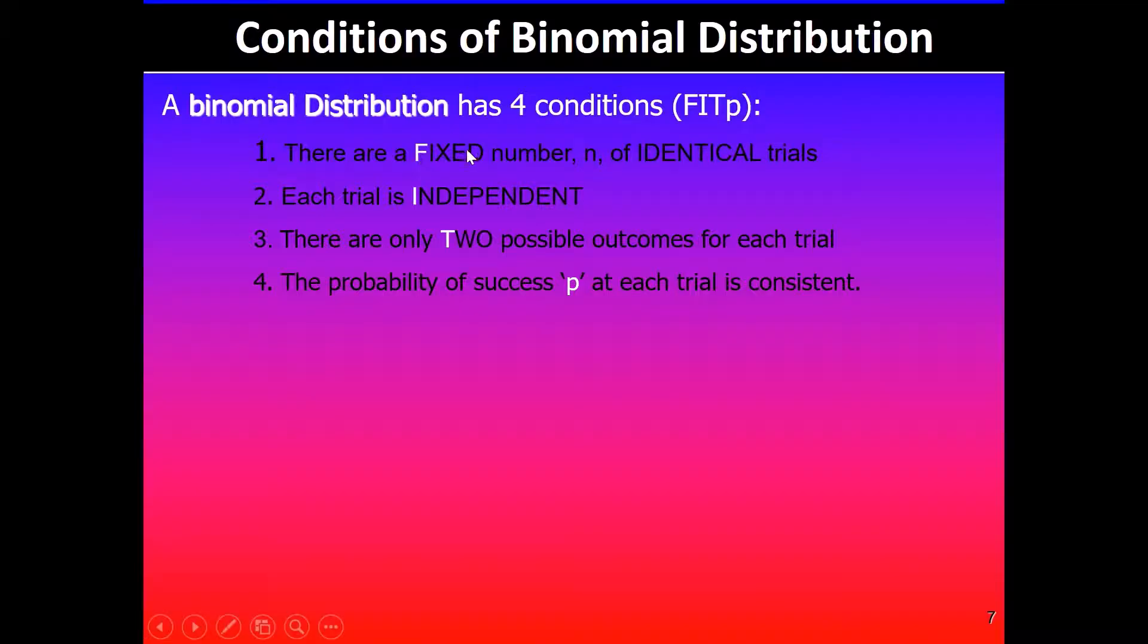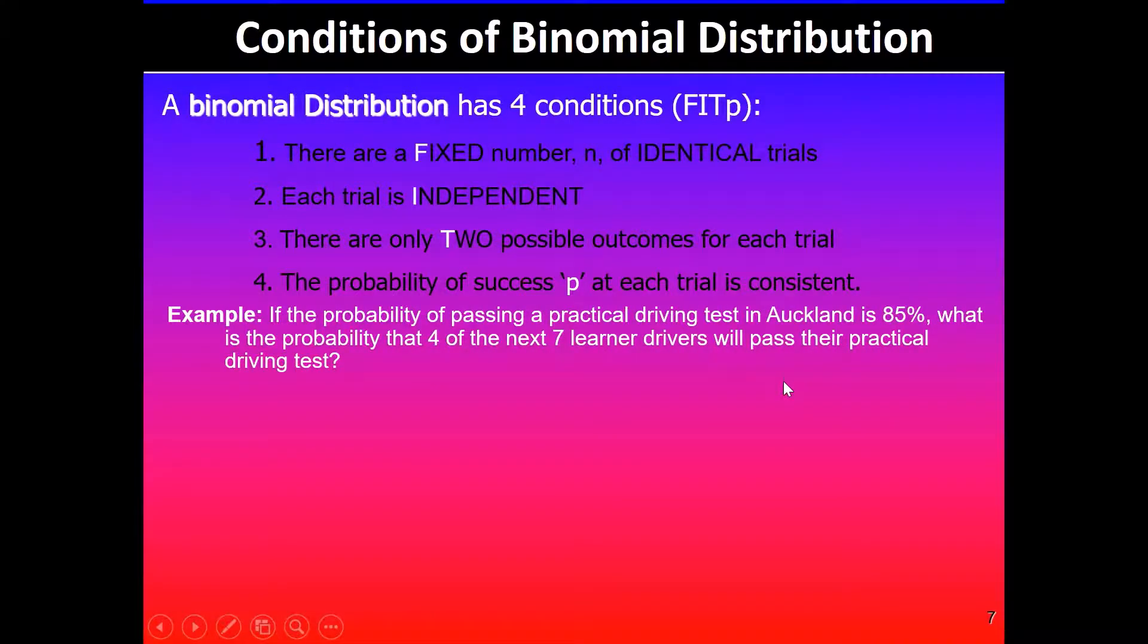In short we can use FITP: F for Fixed number of trials, I for Independent, T for Two outcomes, and P for Probability of success each trial is consistent. We'll quickly have a look at one example.